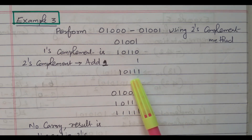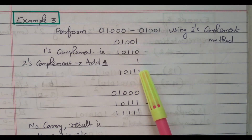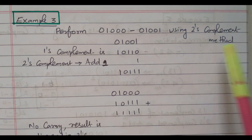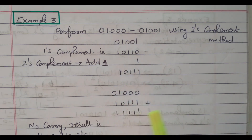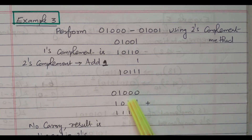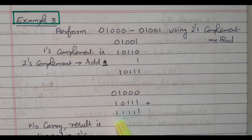Now what we need to do? This 2's complement of the second number should be added with the first number — that is how subtraction is performed in terms of addition using the 2's complement method. So the first number is 01000 and the 2's complement of the second number is 10111. Now we need to add these 2 numbers: 0+1=1, 0+1=1, 0+1=1, 1+0=1, 0+1=1. So we got five 1's. The carry is not generated.